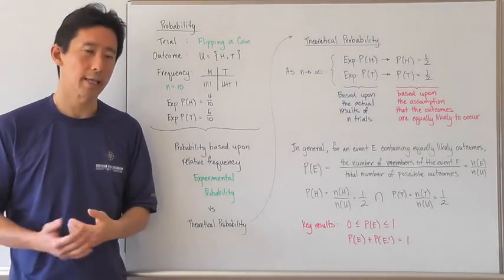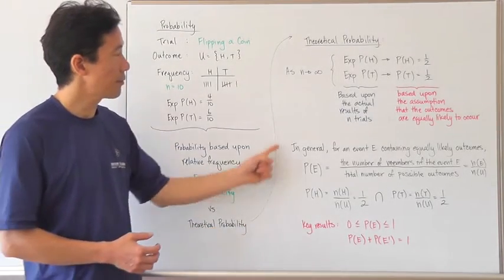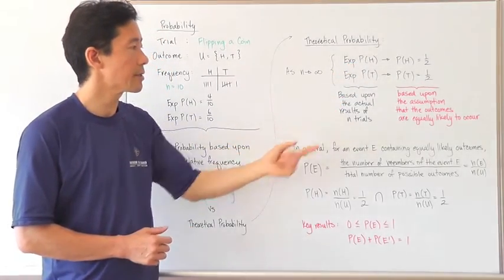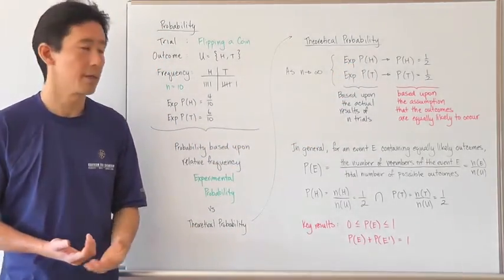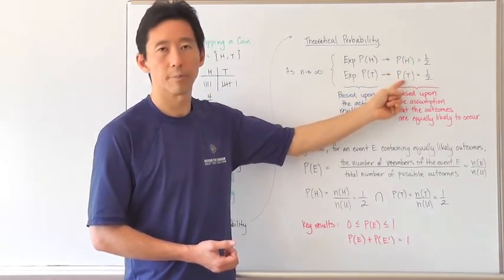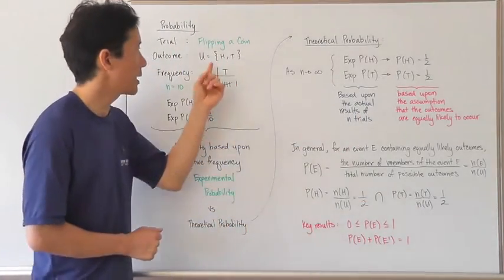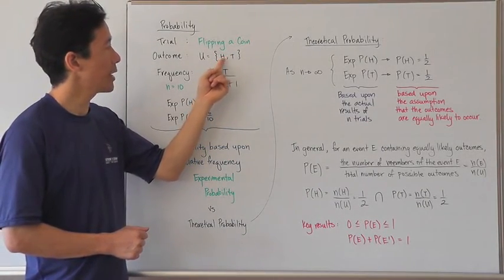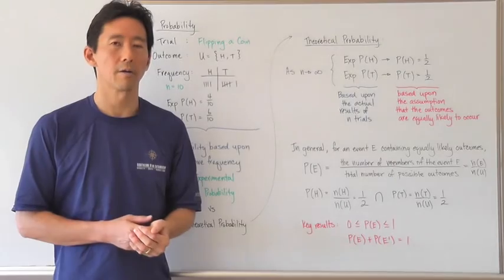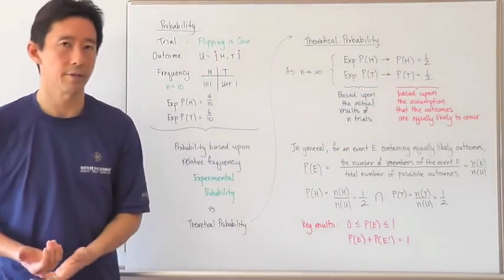What we want to do is contrast experimental probability to theoretical probability, because this is what we're going to be working with much more. The experimental probability is based upon the actual results of any trials. Theoretical probability is based upon the assumption that the outcomes are equally likely to occur. So for flipping a coin, heads and tails are the only two possible outcomes, and assuming they are equally likely, the probability of heads should be one half and the probability of tails should be one half as well.